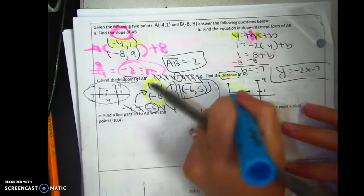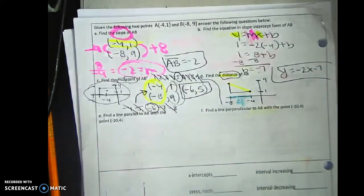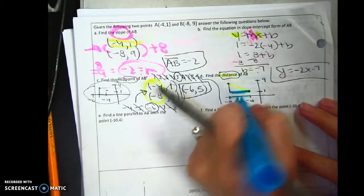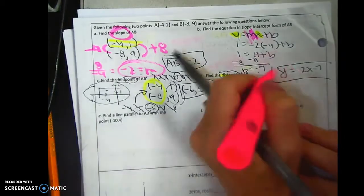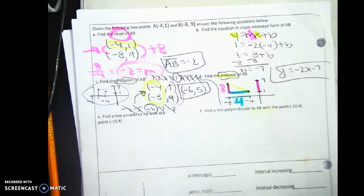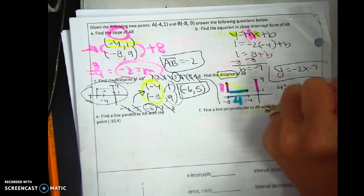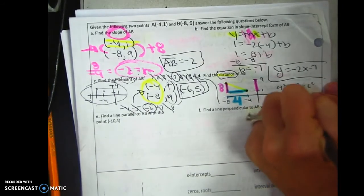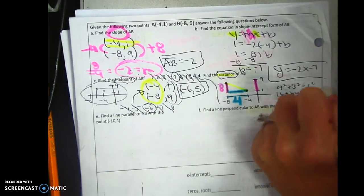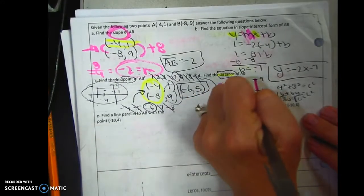So from negative 4 to negative 8 is 4. So I know that from here to here is 4. And then if you look the distance from 1 to 9 is 8. So I'm going to do the Pythagorean theorem which is a squared plus b squared equals c squared. 16 plus 64 equals c squared. 80 equals c squared square root square root. Therefore my distance is rad 80, square root of 80.